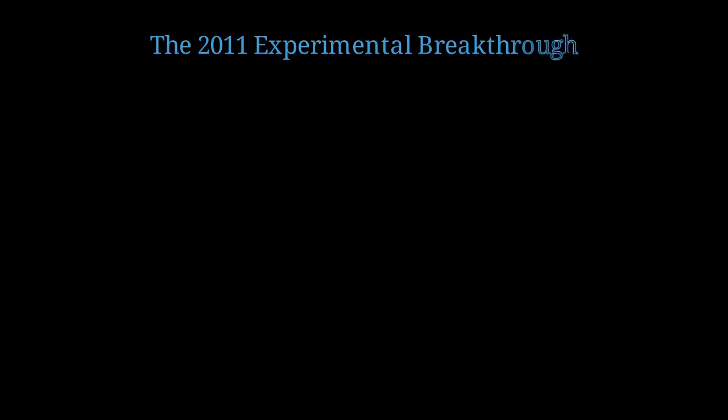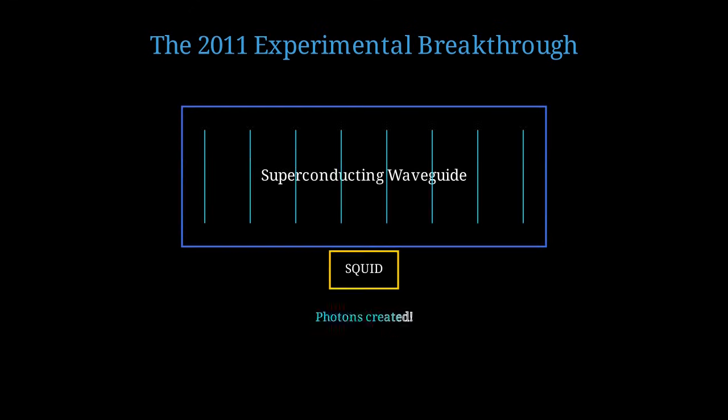So how did experimenters finally observe the dynamical Casimir effect in 2011? They used a clever trick. Instead of moving a real mirror, they created an effective moving mirror using a superconducting circuit. The experiment, performed by Wilson and colleagues at Chalmers University, used a superconducting quantum interference device, or SQUID, to modulate the effective length of a superconducting waveguide at gigahertz frequencies.